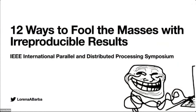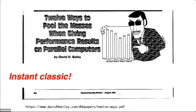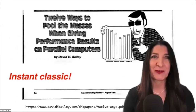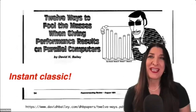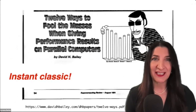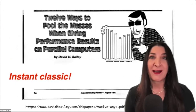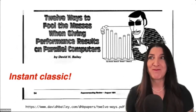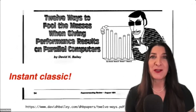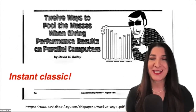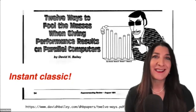Most of you will be familiar with the original, which was David Bailey's '12 Ways to Fool the Masses when Giving Performance Results on Parallel Computers.' This was an instant classic, but it was 30 years ago. Can you believe it? This was a time when supercomputers — the debate was whether the superior kind was the two-oxen Cray machines versus the thousand-chickens systems.